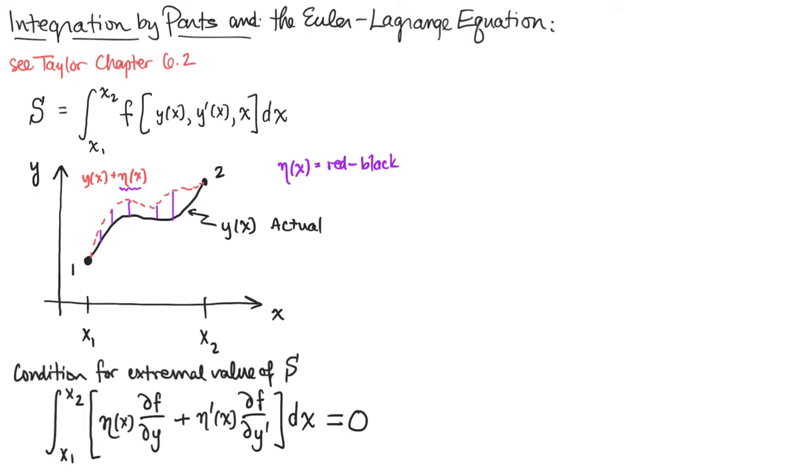And then what we see is that that is somehow equivalent, that same condition ends up being equivalent to the integral x1, x2. First term, the same as before. And now in the second term, we've moved the derivative from eta to the second term, and we've changed the plus sign to a minus sign.